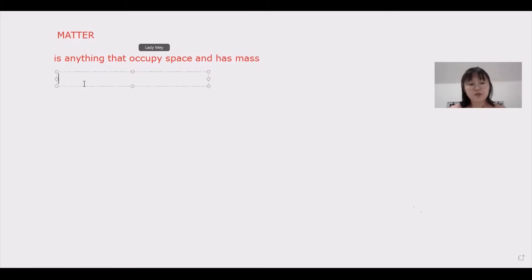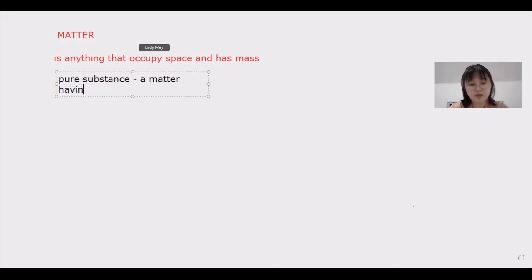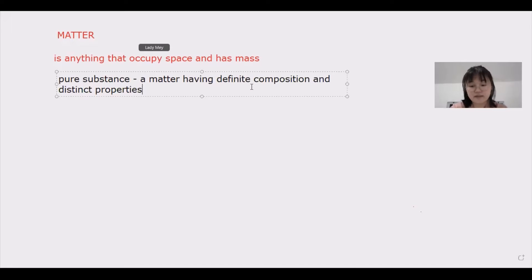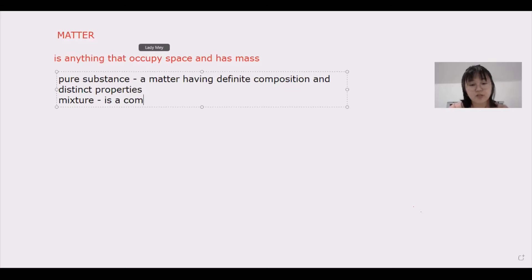Matter is divided into two. The first one is pure substance, which means a matter having definite composition and distinct properties. And the second one is mixture. Mixture is a combination of two or more pure substances.